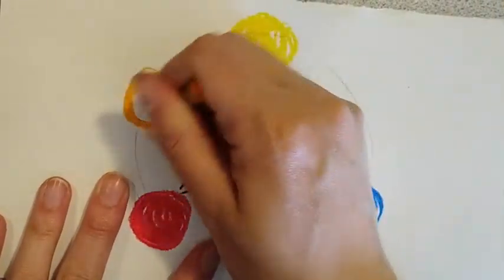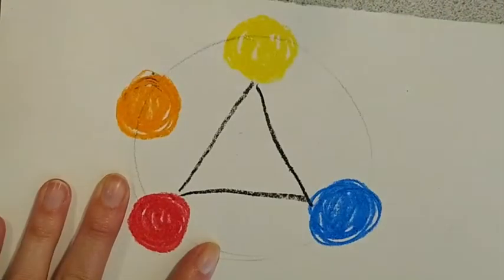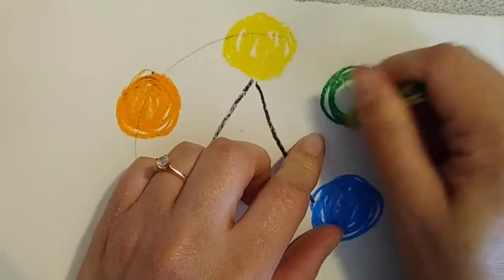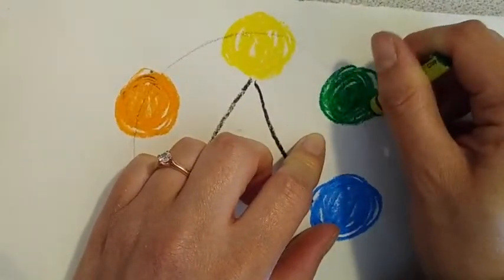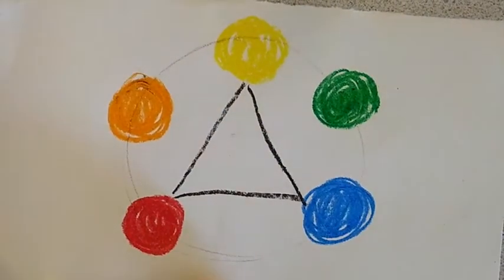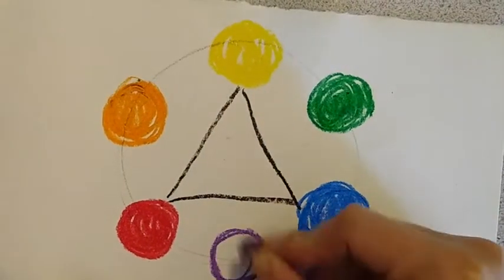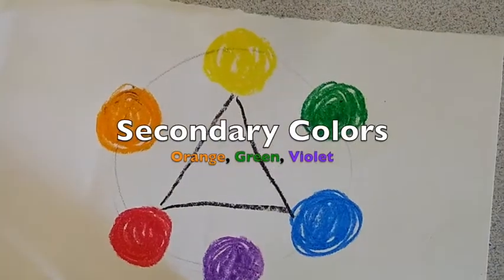If we mix red and yellow we get orange, blue and yellow we get green, and blue and red we get violet. These are called the secondary colors.